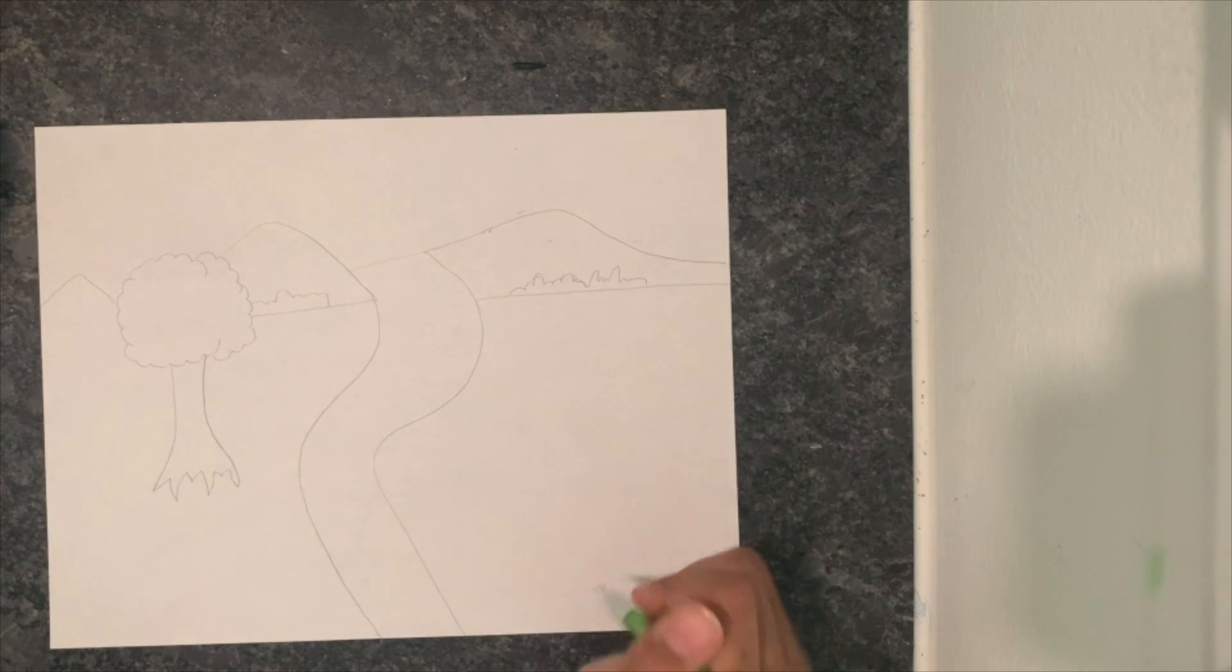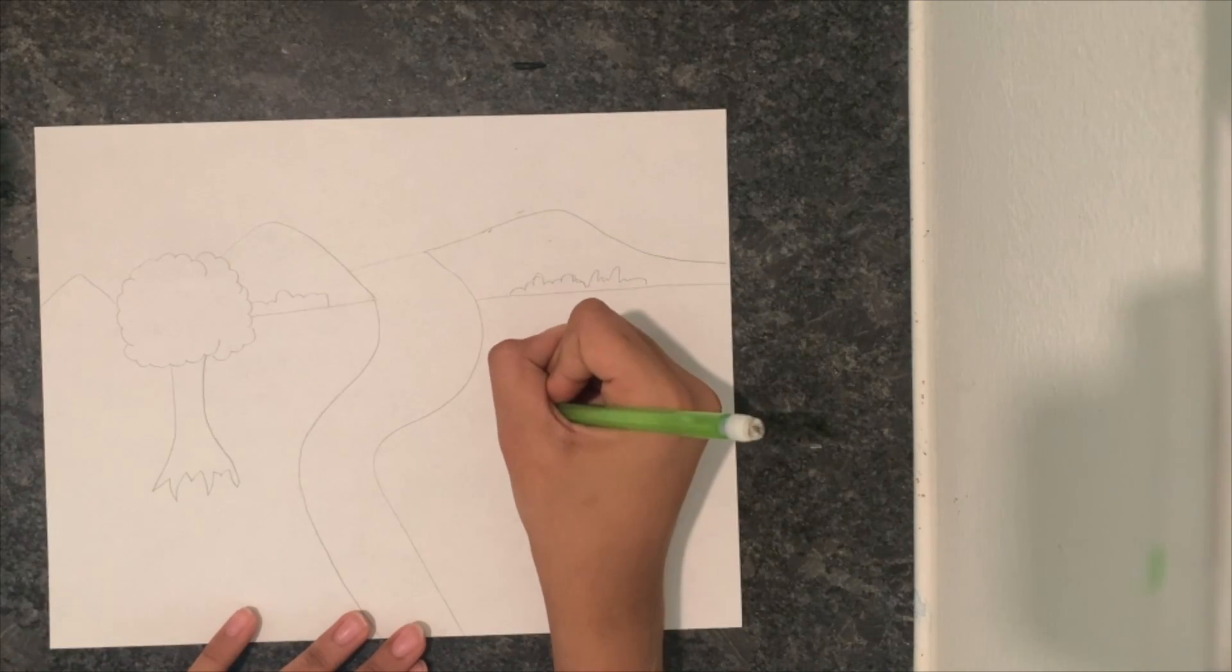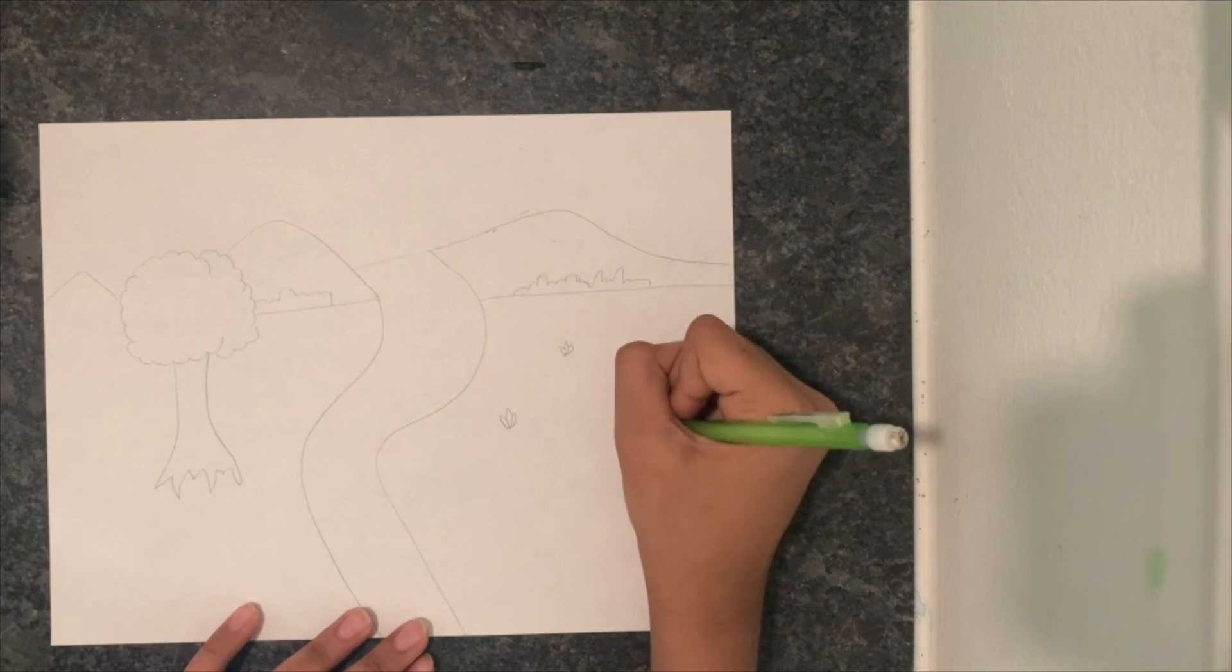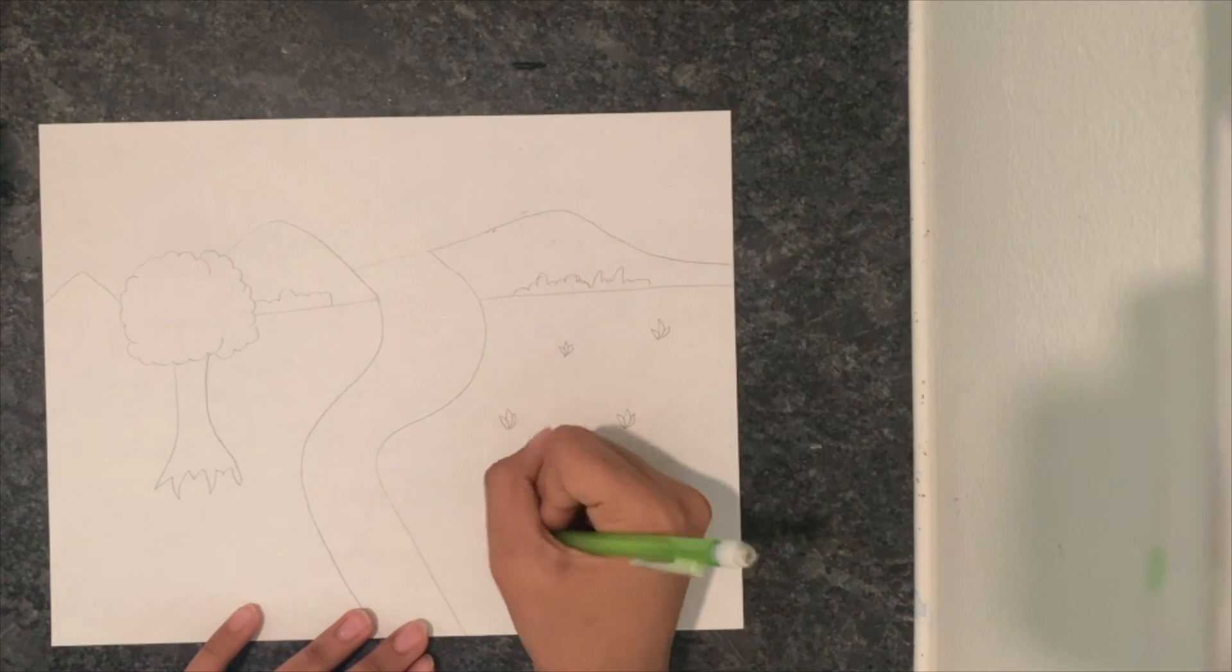Next we're going to be drawing the flowers in this landscape. To draw these flowers it's really easy. Just draw three leaf-like structures together to make these flowers, and make sure you evenly spread them out so it doesn't look too cluttered on your painting.